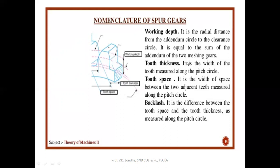Tooth thickness is the width of the teeth. Tooth space is the space between two adjacent teeth. Backlash is the difference between tooth space and tooth thickness — it is used to avoid jamming of the gear. All these are measured on the pitch circle.